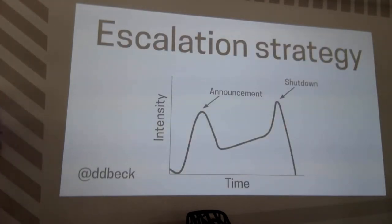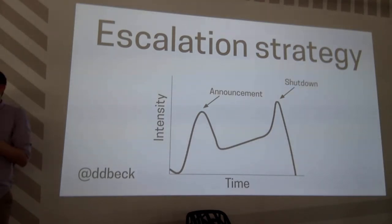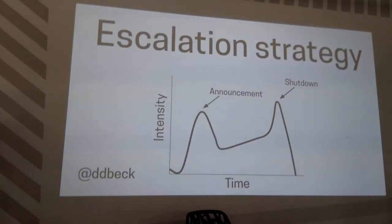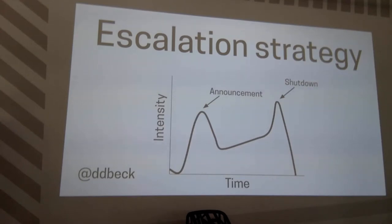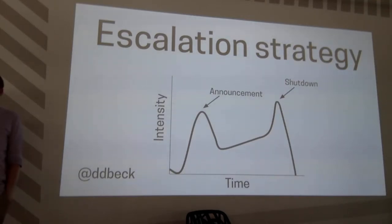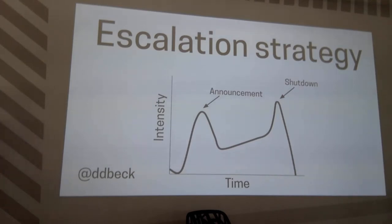Once you have those channels to work with, you can think about how they're going to fit into the overall communication escalation strategy. It's likely your communications will have two distinct peaks: an initial announcement with a big flurry of communications and lots of questions, then a period of steady lower-intensity reminders that the end is coming, and then a final extinction burst when you actually shut down the API and eventually go silent.